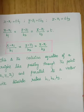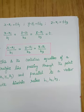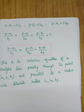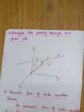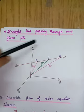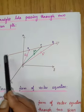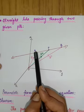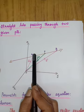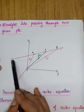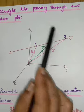So under condition one — one passing point and one parallel vector given — we have seen the parametric, non-parametric, and Cartesian equations of the straight line. Now we move to the second condition: the straight line passing through two given points. In the diagram, the straight line passes through points A and B whose position vectors are A vector and B vector.